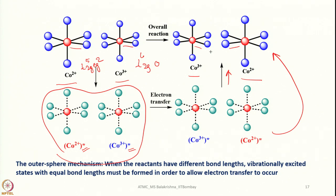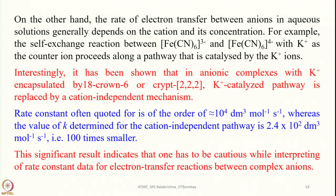For the outer-sphere mechanism, when reactants have different bond lengths, vibrationally excited states with equal bond lengths must be formed in order to allow electron transfer to occur. On the other hand, the rate of electron transfer between anions in aqueous solution generally depends on the cation and its concentration. In a typical self-exchange reaction between hexacyanioferrate(III) and hexacyanioferrate(II) with K+ as counter ion, the reaction proceeds along a pathway catalyzed by the K+ ions — cations play a major role and facilitate this process through their catalytic activity.